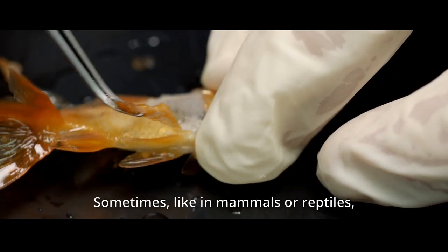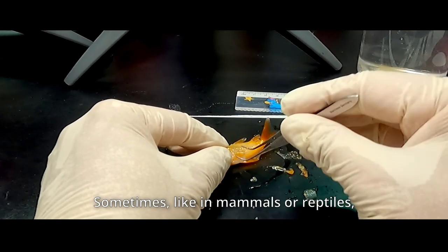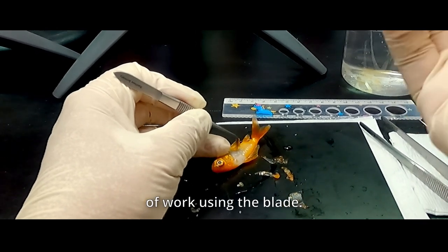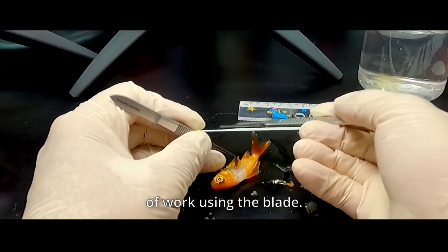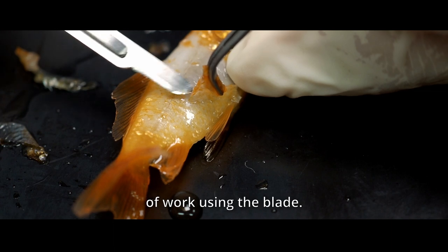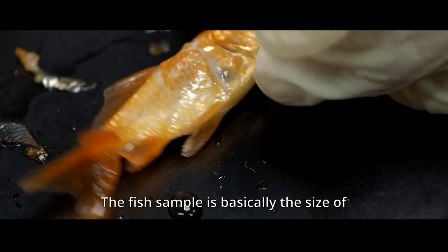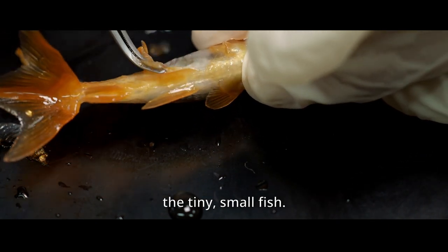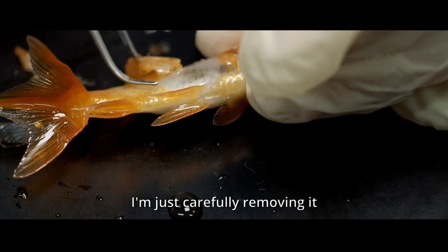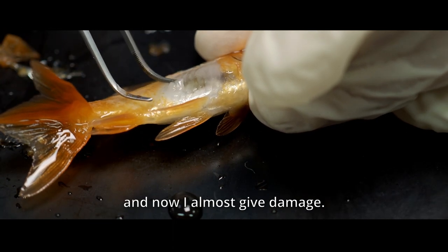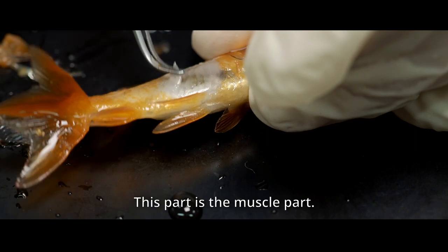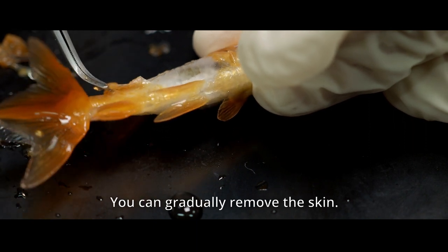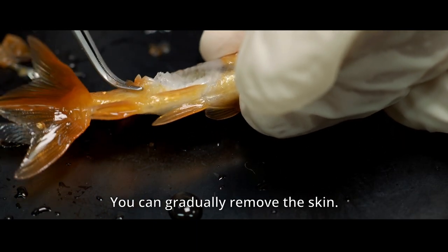Then, sometimes, like in the mammals or reptiles, or really big sharks, you have to do this kind of work. Using the blade. But the fish sample is basic, especially this size of the tiny small fish. Just carefully removing it. And now, I almost gave damage. Like this. This part is damaged. It's a muscle part. And you can gradually remove the skin.